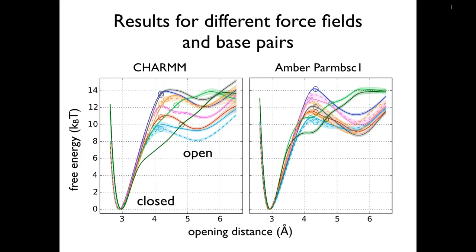Looking at results from this example: you can see free energy profiles for different force fields and different base pairs in different colors. The free energy difference is quite high, so the sampling is accelerated by several orders of magnitude here. If you would just wait, you would never see the base pair opening, so the method works as it should.